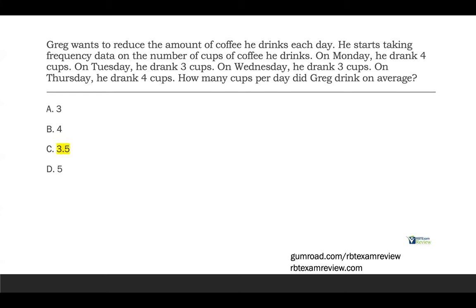We have four data points. We divide 14 by four, and we get three and a half. So average doesn't change on the RBT exam or as an RBT — simple basic math. The exam gives you paper, it gives you a calculator. You won't be doing anything in your head. It's a very important skill to have as an RBT. You're going to be looking at averages and rates quite a bit, so they might test you on this, and you should be ready.